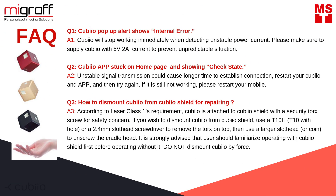Frequently asked questions. Question 1: Cubio pop-up alert shows internal error. Cubio will stop working immediately when detecting unstable power current. Please make sure to supply Cubio with 5 volts, 2 amps current to prevent unpredictable situations. Question 2: Cubio app is stuck on homepage and showing checked state. Unstable signal transmission could cause longer time to establish connection. Restart your Cubio and app and try again. If it's still not working, please restart your mobile.